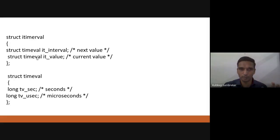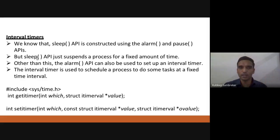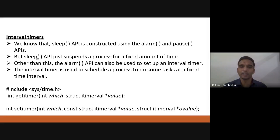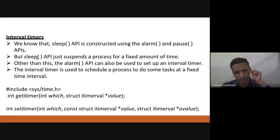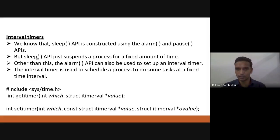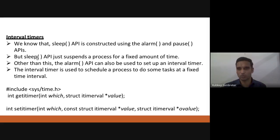Remember that interval timers are similar to sleep, but they are evaluated in Unix using two system calls: getitimer and setitimer. This entire signals chapter is mostly about syntaxes — not like the previous chapters on files and processes. The signal chapter is mostly about examples, and exam questions will typically ask for syntaxes and their explanation.